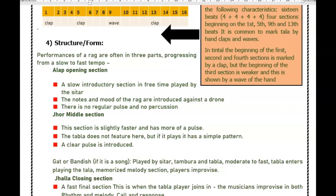I mentioned the gat — I want to show you where that fits in. It is important this year that we know the structure and form of Indian music. We've got the alap, the opening section. That slow introduction shows off the notes and the mood of the raga, and it is introduced against a drone — usually a sitar and a drone, with no percussion or rhythmical element.